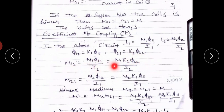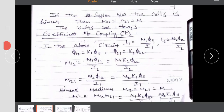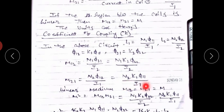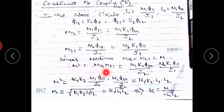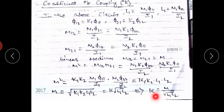We know that M12 equals N1·φ21 divided by I2, and since φ21 equals K2·φ22, M12 equals N1·K2·φ22 divided by I2. And M21 equals N2·K1·φ11 divided by I1. For a linear medium, M12 equals M21 equals M. Multiplying these two expressions: M² equals K1·K2·(N1·φ11/I1)·(N2·φ22/I2) equals K1·K2·L1·L2. Therefore M equals root of (K1·K2·L1·L2), and since K1 equals K2 equals K, we get M equals K times root of L1·L2, and finally K equals M divided by root of L1·L2.